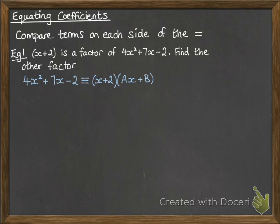Okay, so if x plus 2 is a factor, then that is equal to x plus 2 multiplied by some other factor. We don't know the values of a and b that would make that other factor, but we know it has to be a linear bracket because we've got it equal to a quadratic on the left-hand side.